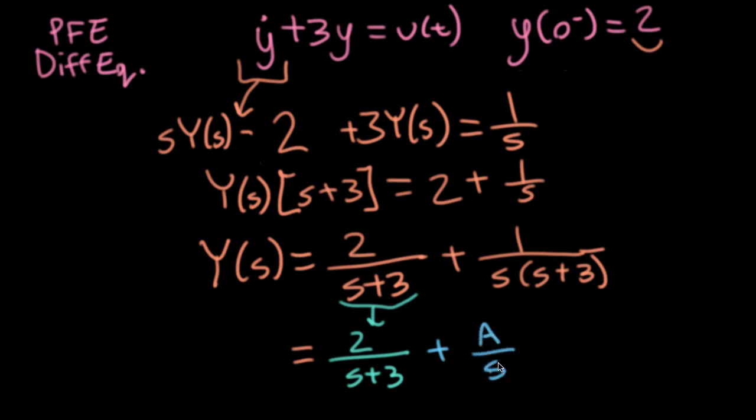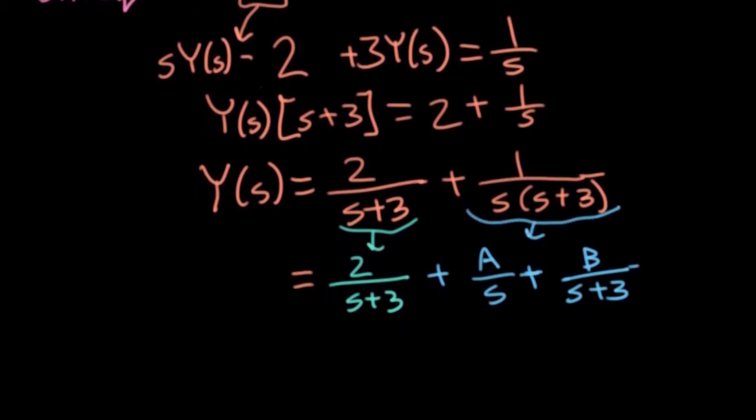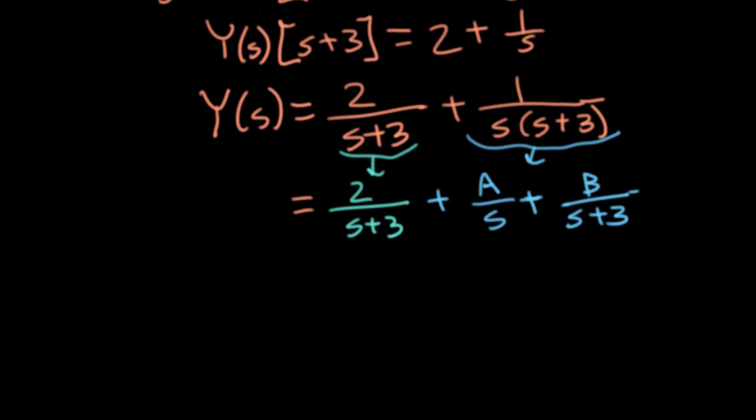I'll write A over s plus B over s plus 3. There's a lot of textbooks that instead of different letters like A and B, they'll use something like c1, c2, etc. I found that using subscripts like this as numbers tends to be error prone. If you call them completely distinct letters, I think it's easier to keep track of them. So notice I'm using different colors here to indicate the results of these particular terms.